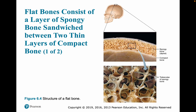Here is a flat bone from our skull. We can see the layer of compact bone on both surfaces and the spongy bone in between. If we magnify that, you can see there are a lot of trabeculi with holes that would normally be filled with marrow in those cavities.